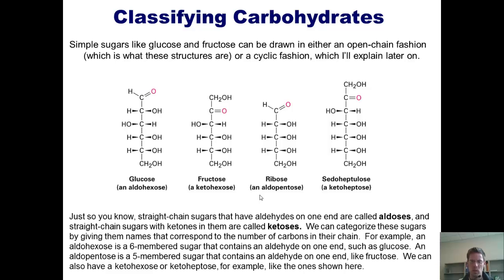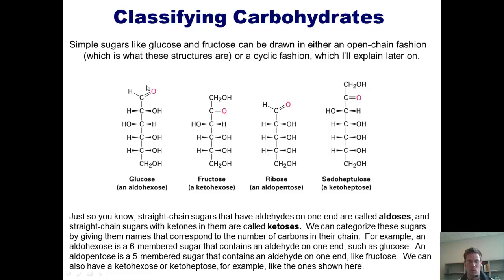Simple sugars like glucose and fructose can be drawn in either an open chain fashion, which is what these structures here are, or in a cyclic fashion, which I'll explain later on. For now, let's just focus on this open chain way of drawing sugars. Straight chain sugars that have aldehydes on one end, like glucose or ribose, shown here, are called aldoses. And straight chain sugars with ketones in them, like fructose or sedoheptulose, shown here, are called ketoses.